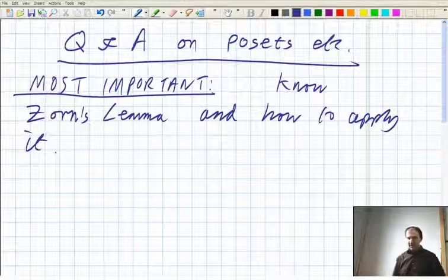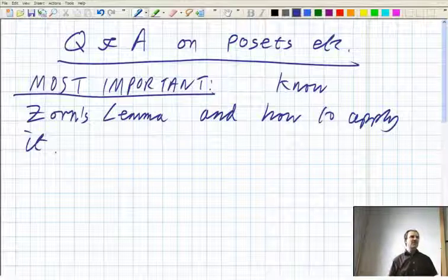So, for the axiom of choice implies Zorn's lemma, I'll refer you to one of the appendices in Rudin's real and complex analysis. I can never remember that one off by heart, and it's quite long and interesting.